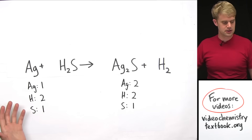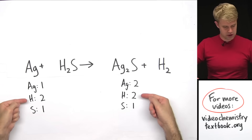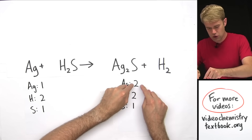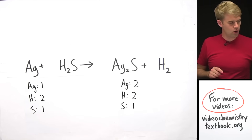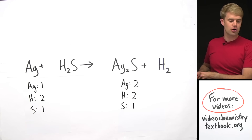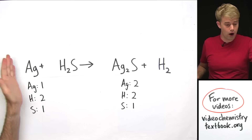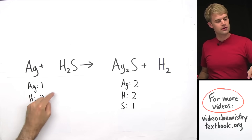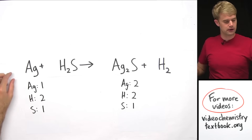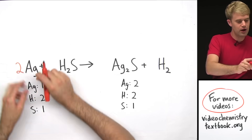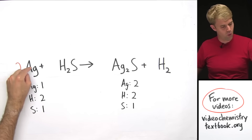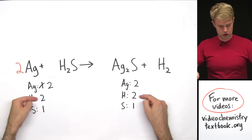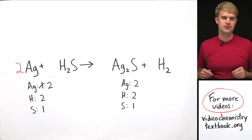What balances and what doesn't? Well, the hydrogens and sulfur both balance, but the silver — we have two here and one here. We can fix it by adding a coefficient in front of one or more of these elements. I just put a two in front of this Ag, so now instead of having one Ag I have two, and it balances.